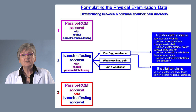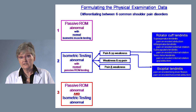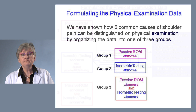For bicipital tendinitis, two maneuvers reproduce the pain: resisted long lever flexion and resisted horizontal adduction. These test different muscles from the rotator cuff, so the specific isolated abnormality of pain produced by isometric testing can determine which muscle or tendon is involved.